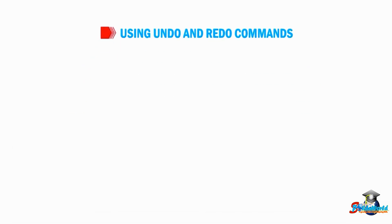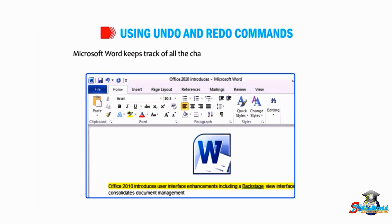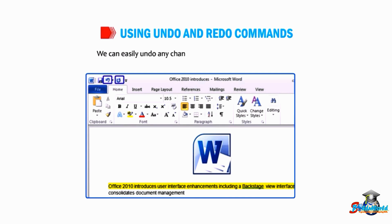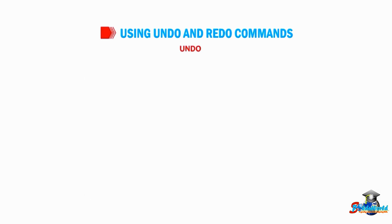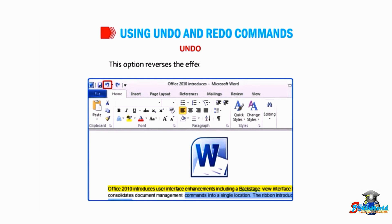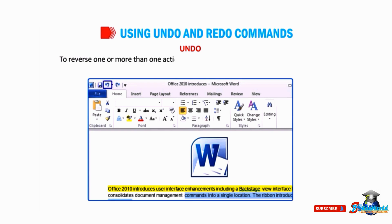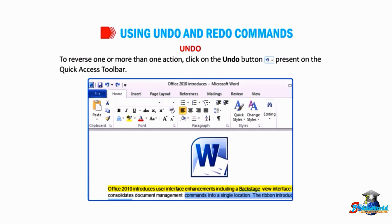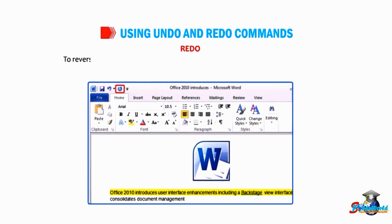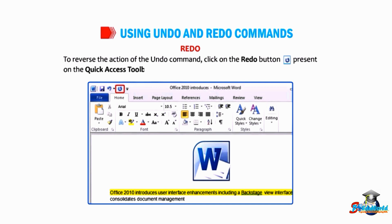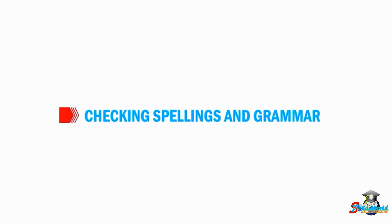Let us understand how to use Undo and Redo commands. Microsoft Word keeps track of all the changes that we make in a document. We can easily undo any change and restore the original text. The Undo option reverses the effect of the last command. To reverse one or more actions, click on the Undo button on the Quick Access Toolbar. Redo reverses the action of the Undo command — click on the Redo button on the Quick Access Toolbar.